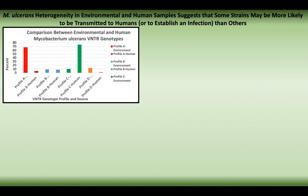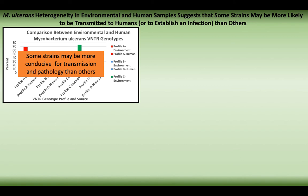What we found was that certain genotypes were more prevalent in environmental samples. For instance, profile A represented by the red bars — 68% of environmental samples matched profile A, whereas only 5% of the human samples matched profile A. Looking at profile C in the green bars, 74% of the human samples matched profile C, whereas only 11% of our environmental samples matched profile C of M. ulcerans. This suggests that some strains may be more likely to be transmitted or to produce pathology or establish infection than others.